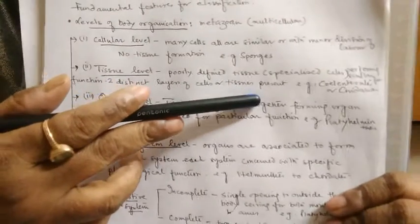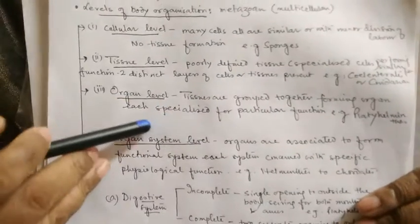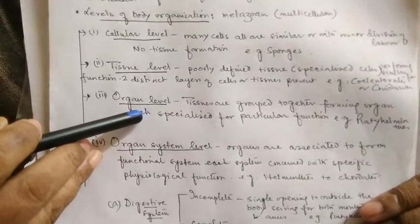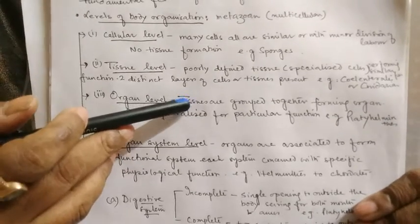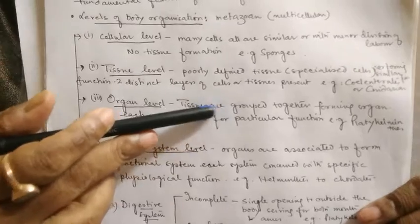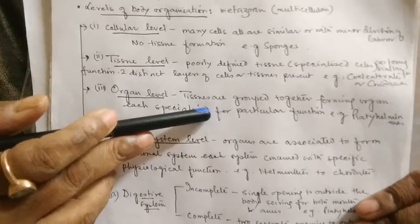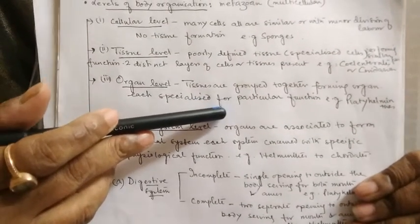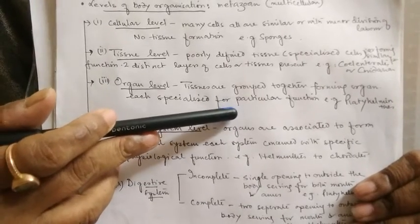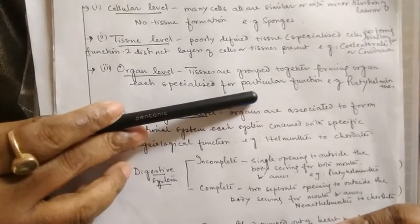Ctenophora also has the tissue level of organization. Next is the organ level of organization — tissues are now grouped together for a particular function, forming an organ. This organ level of organization is present in Platyhelminthes. Platyhelminthes have the first organ level of organization.